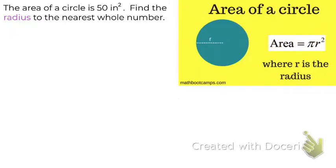This question says the area of a circle is 50 inches squared. Find the radius to the nearest whole number.